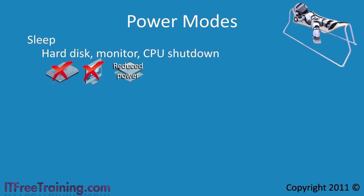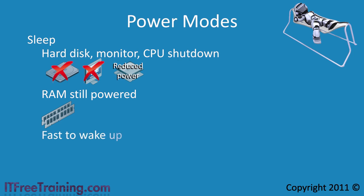While in sleep mode, power is still used to power the RAM. The advantage of this is that the computer will wake from sleep mode very quickly. When the computer awakes from sleep, it will return to the same state it was in before it went to sleep. All that needs to happen is devices that were shut down need to start operating again. The slowest of these will be the hard disk, which needs time to spin up again.